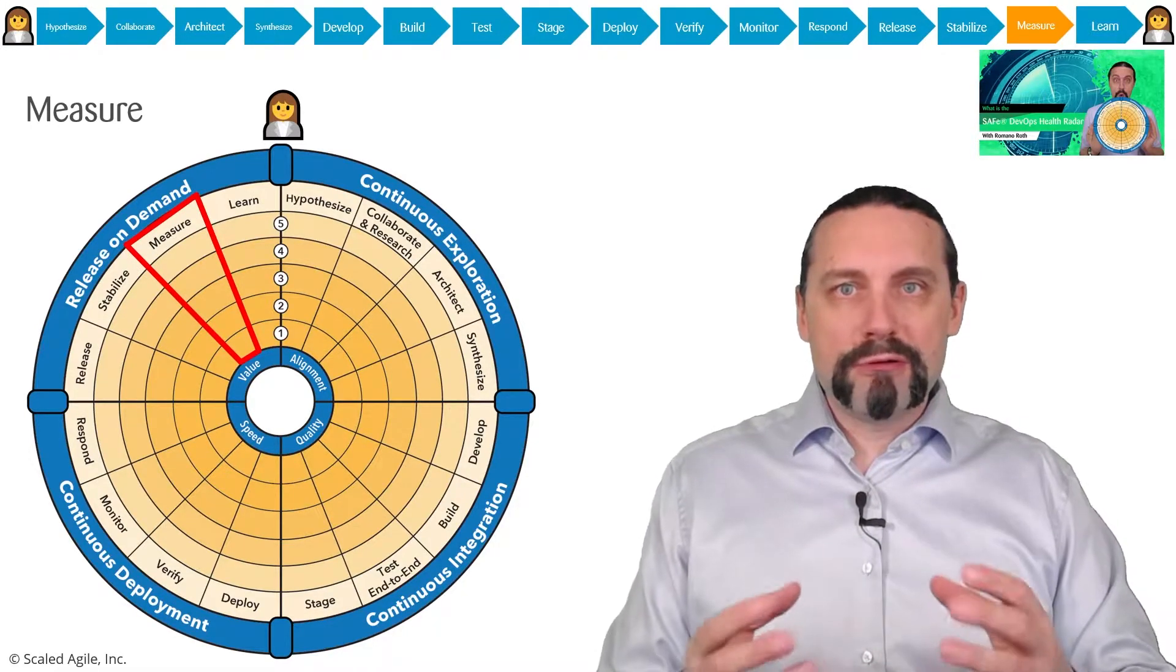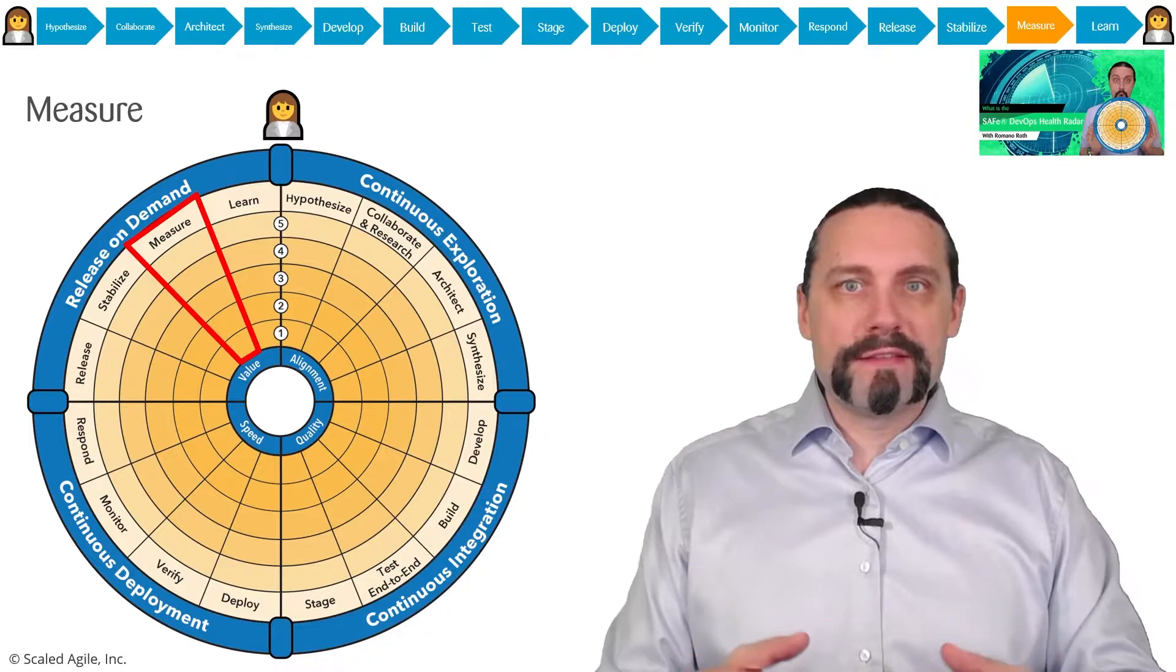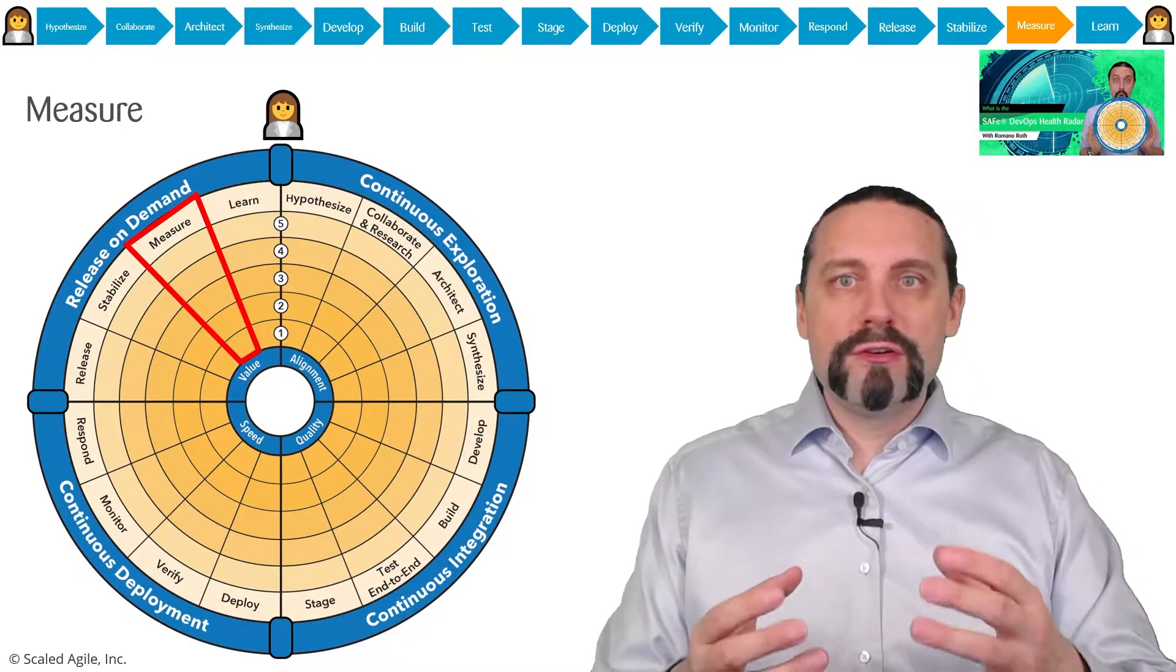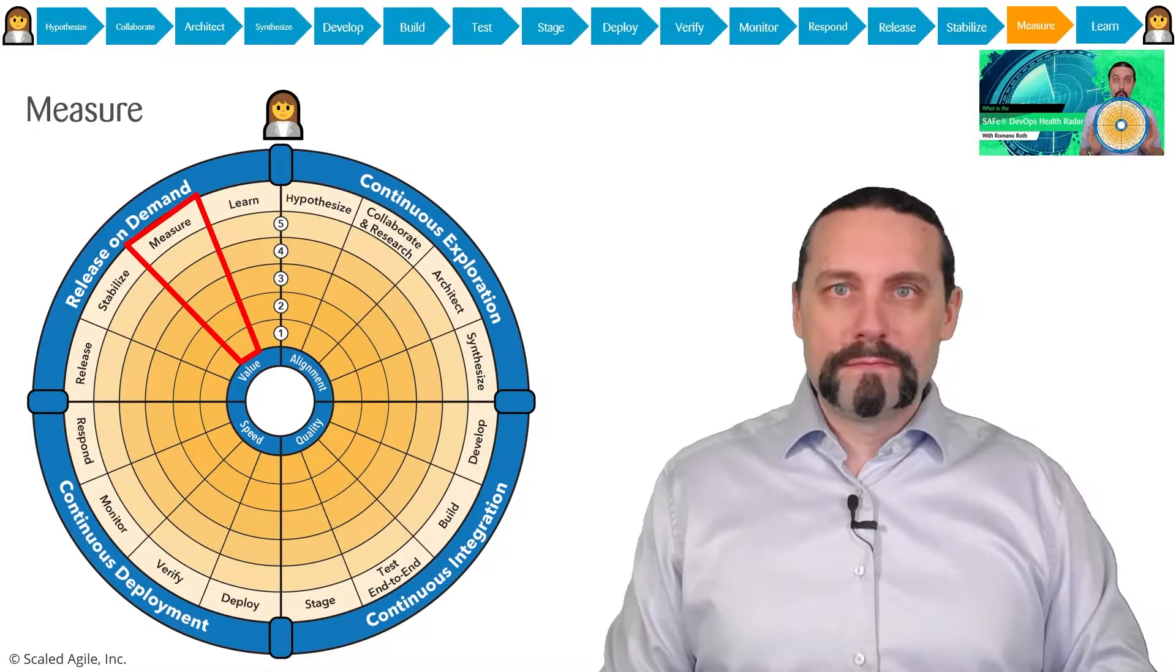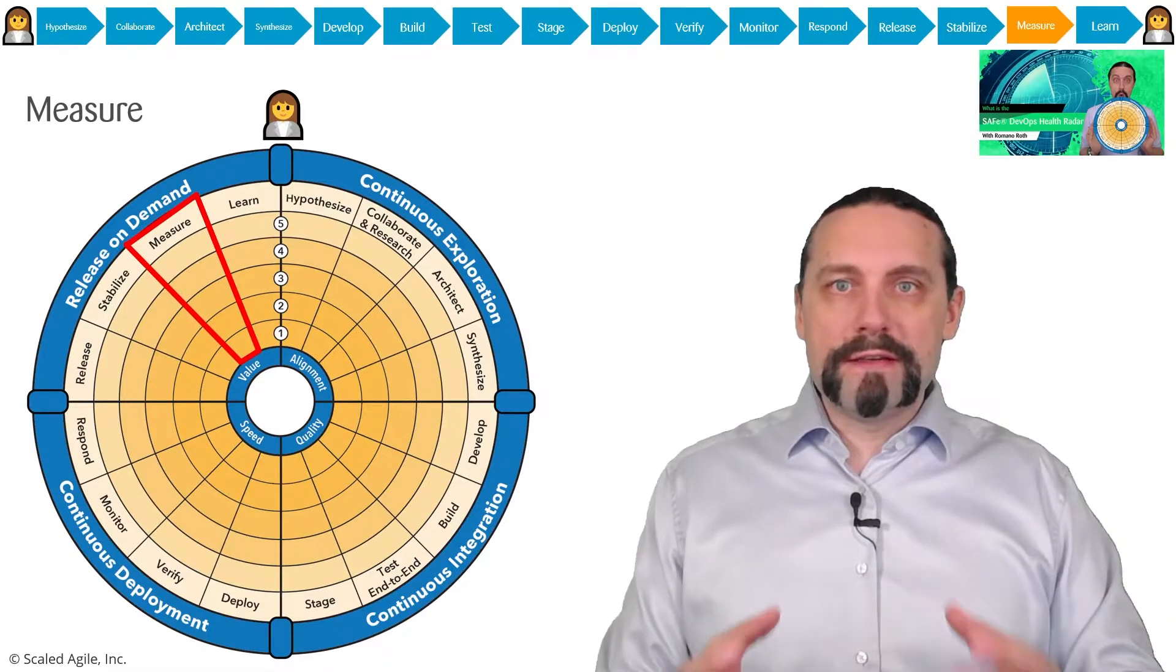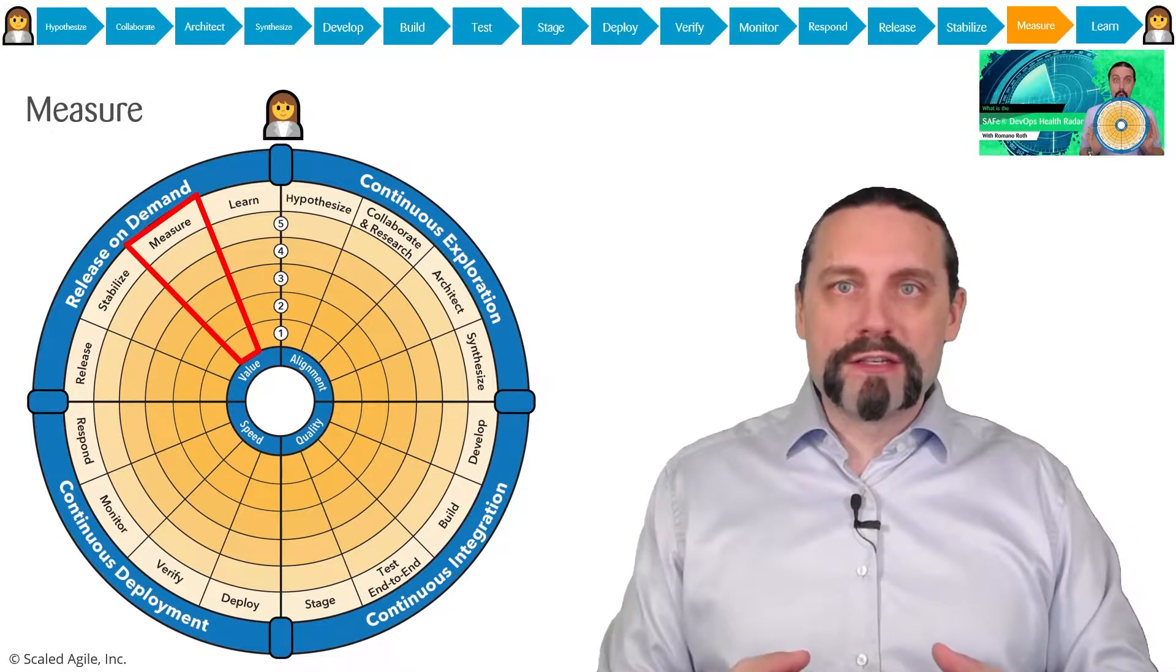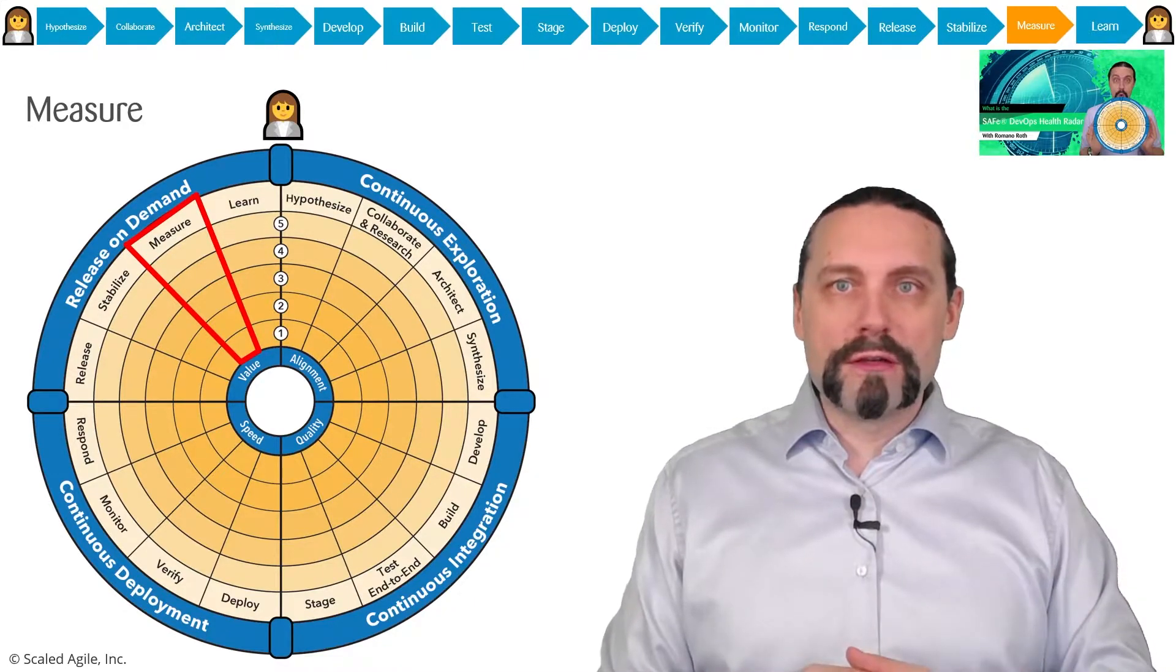This deployable artifact is then tested end-to-end and put onto the staging environment for final verification. Then we deploy this new functionality into production with the feature toggle off.